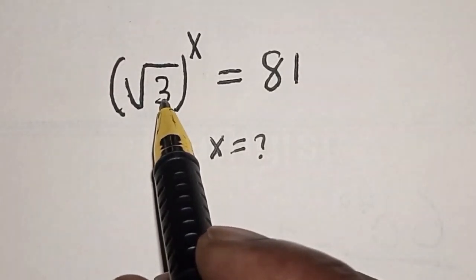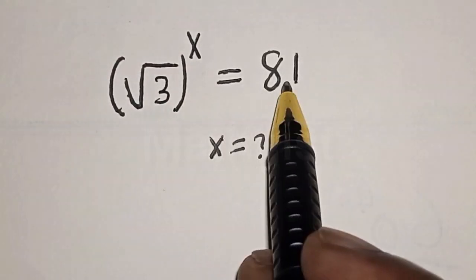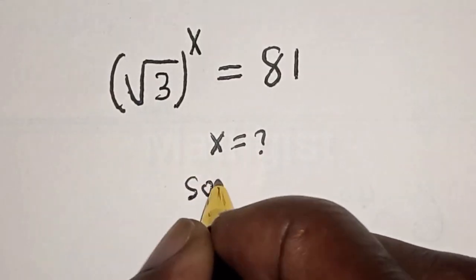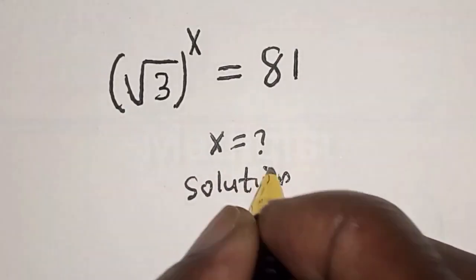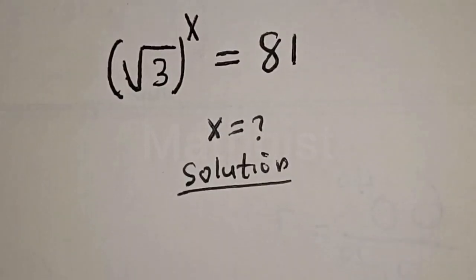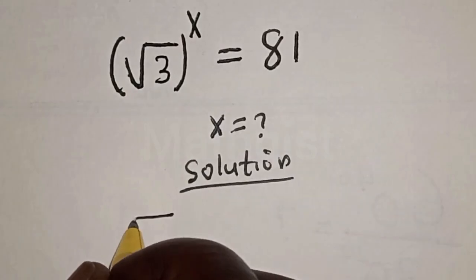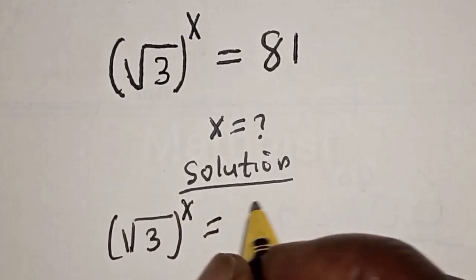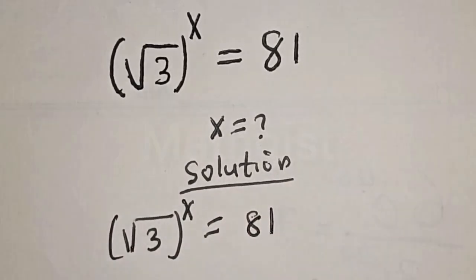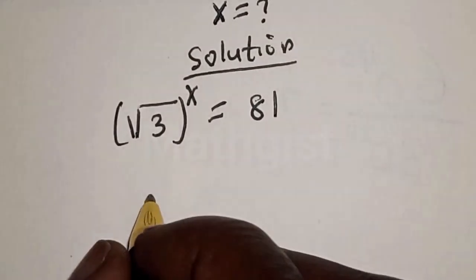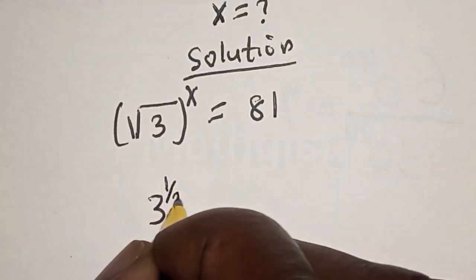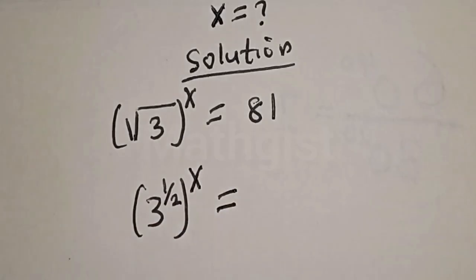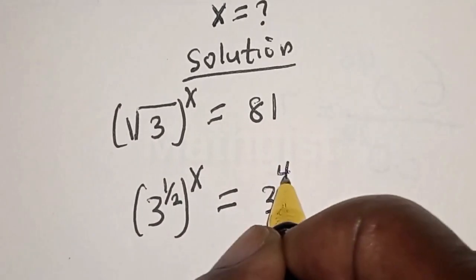Square root of 3 raised to power x is equal to 81. What is the value of x? We have the given equation: root 3 raised to power x is equal to 81, and this is the same thing as 3 raised to power 1 over 2, raised to power x, is equal to 3 raised to power 4.